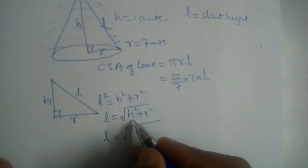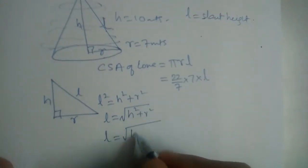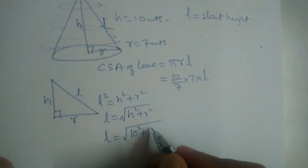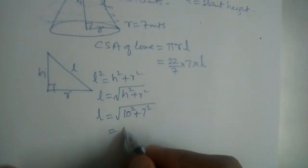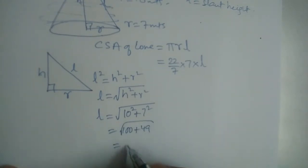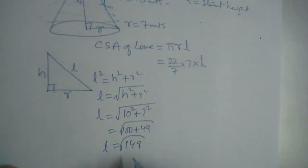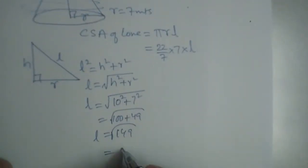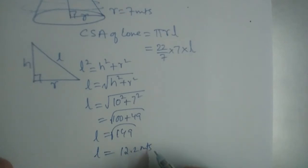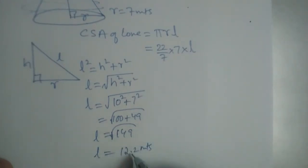L = √(10² + 7²) = √(100 + 49) = √149, which equals 12.2 meters. I'll explain how we got 12.2 at the end of this video.